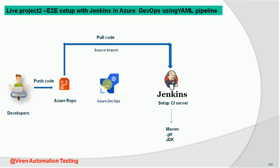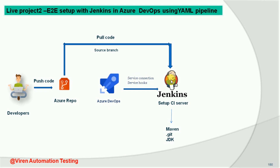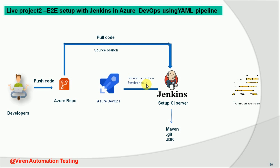Once that is done, we will work with Azure DevOps. To integrate Jenkins in Azure DevOps, we need to create two things. First is the service connection — this allows the Azure repository to communicate with the Jenkins server, acting as a link between Azure DevOps and Jenkins. Second is the service hooks in Azure DevOps, which will trigger the build in Jenkins to deploy the WAR file automatically whenever someone commits code to the Azure repository.